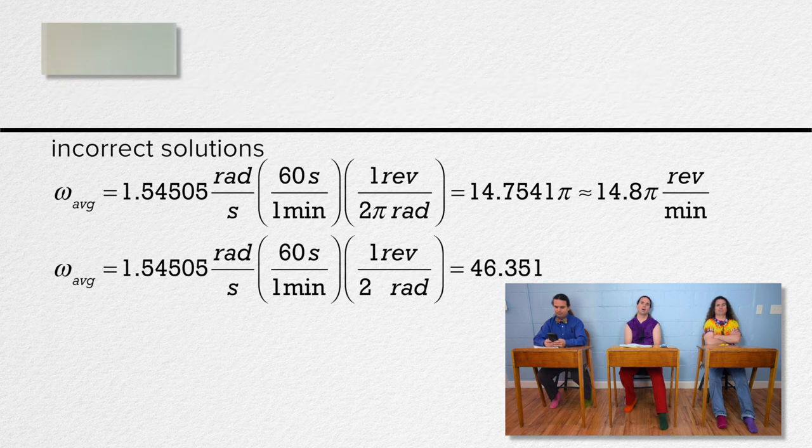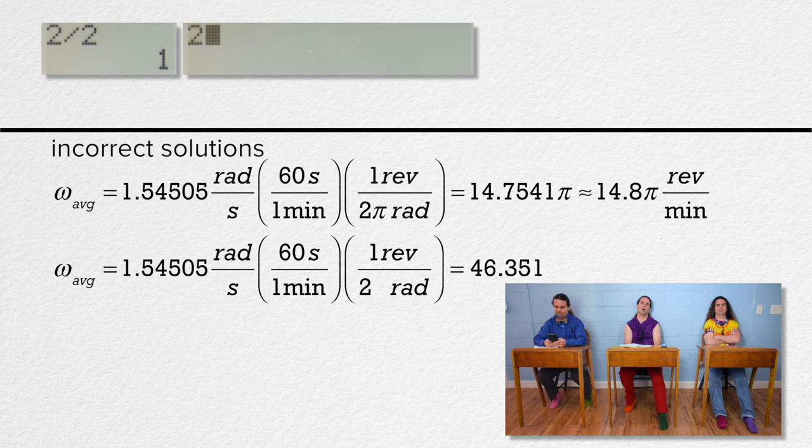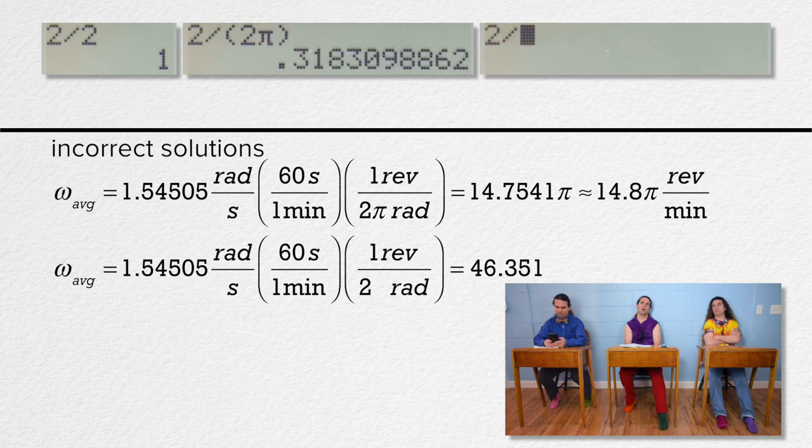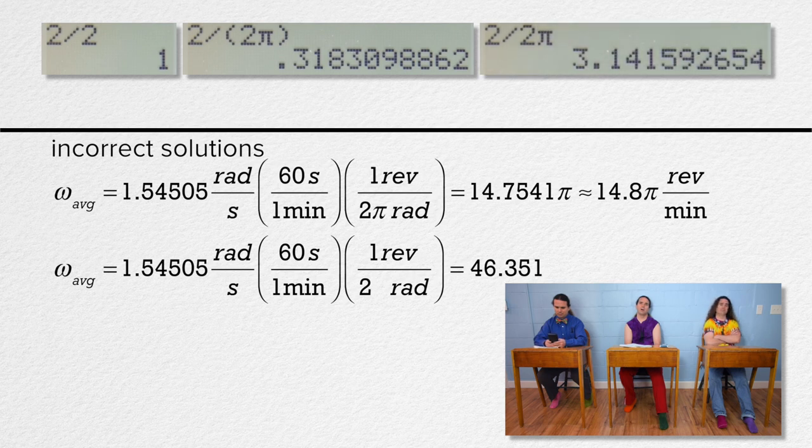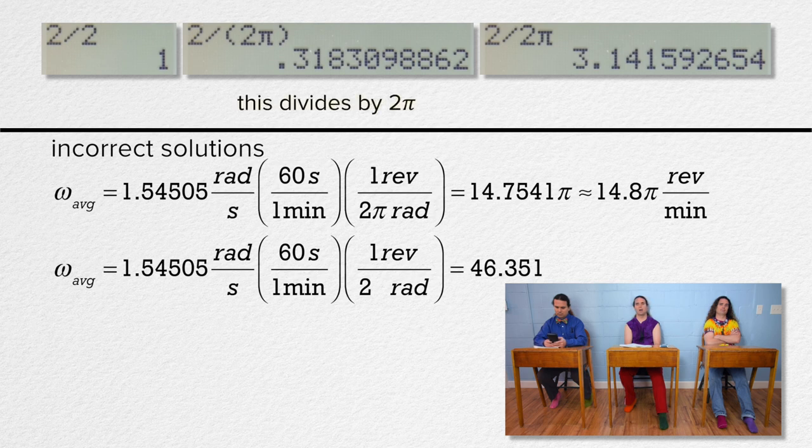Billy, your mistake is actually in the use of your calculator and is the most common student mistake. When you divide by 2π on your calculator, you need to be careful to put parentheses around 2π. If you do not put parentheses around 2π, then you are, according to the order of operations, telling your calculator to divide by 2 and then multiply by π.